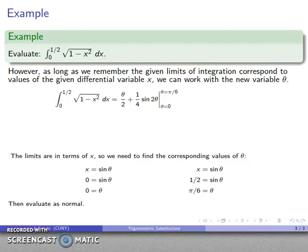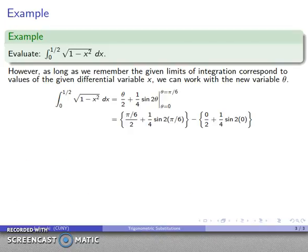I can evaluate this integral as normal. At pi over 6, I substitute pi over 6 into this and get this mess. I substitute theta equals 0 and get this. After all the dust settles, I end up with the answer pi over 12 plus one quarter square root of 3 over 2.